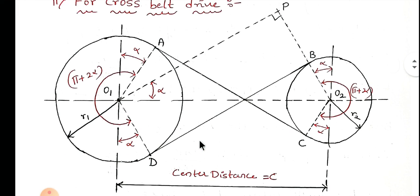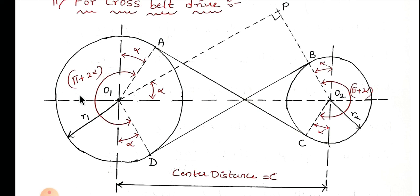From the geometry shown in the figure, C is the central distance between points O1 and O2. From point A to point B you can see two planes. The angle between them is 180 degrees, or π. The angle from the plane to A is α, and similarly from the plane to D is α. Therefore the angle between the D plane and A plane is 180° plus α plus α, which is π + 2α.